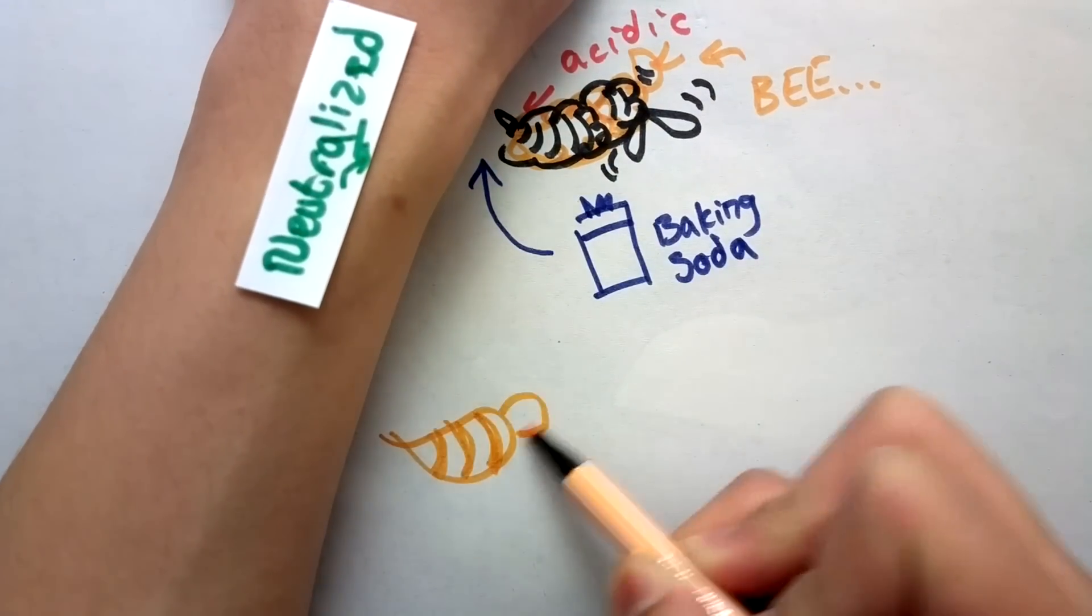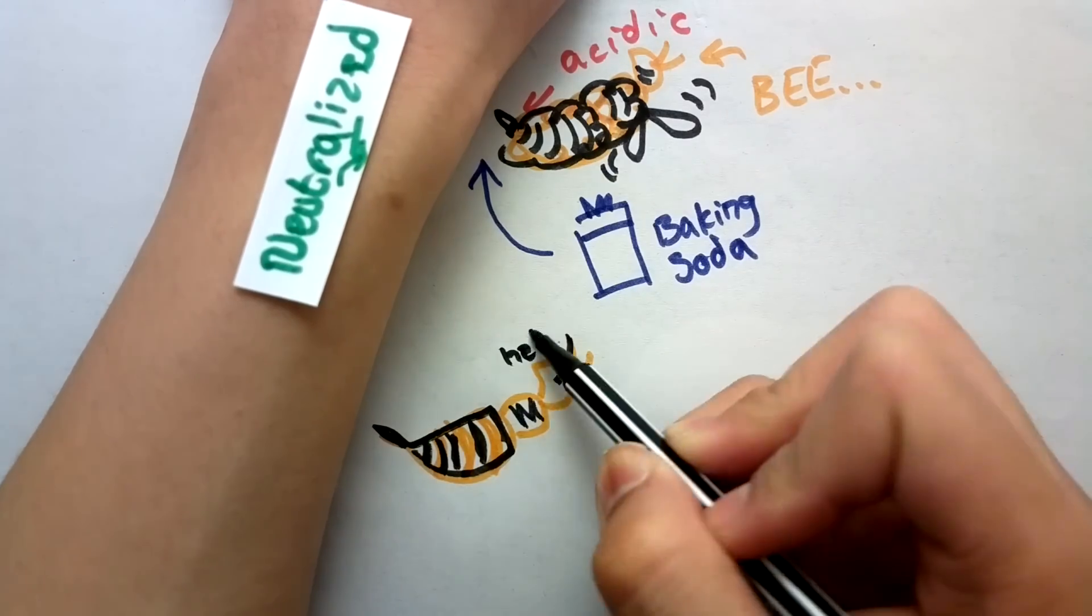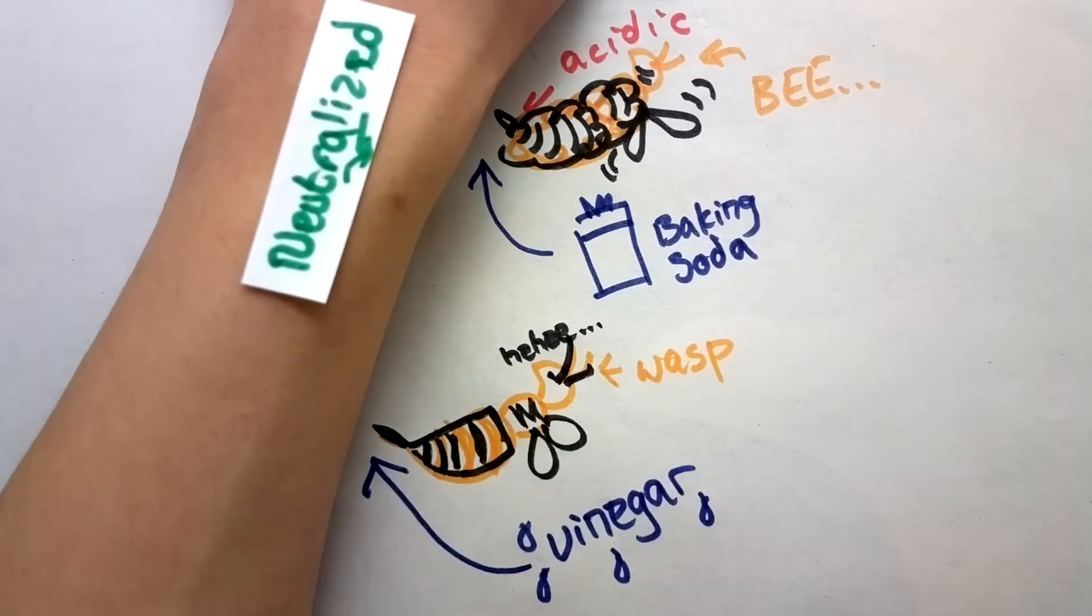Wasp stings, on the other hand, is basic, as in it's alkali, and vinegar is used for relief on wasp stings.